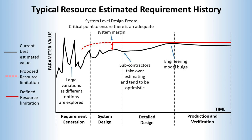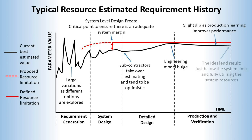I have called this the 'engineering model bulge' — the engineering models made to qualify the design are usually the first real test of paper estimates, and they often come in a little heavier. At this point you do not need as much margin, as there is considerably less uncertainty in the design. But this is also the time when testing starts to highlight unforeseen issues that normally take resources to resolve — so this can be the darkest hour for a project as money, time, and resources all run out together. Assuming you can get through these detail design issues into production, it is rare for there to be a subsequent problem. Production units are normally a little better than engineering models as fewer mistakes are made and the team has learned how to make things more efficiently. At the end, hopefully you are below the maximum allowable but not by a lot, so the overall system is as optimised and efficient as possible.